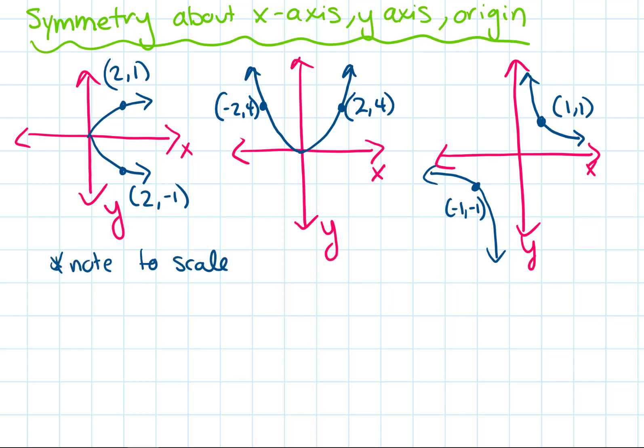In the first diagram, this is a visual example of symmetry about the x-axis. Our x-axis is our horizontal axis. The reason this relationship has symmetry about the x-axis is that we have two coordinates shown. The x values of those coordinates are the same, and the y values are reflections of each other — that means it's symmetrical about the x-axis. So if we start with some coordinate (x, y), the symmetrical coordinate has the same x value and the opposite sign for the y value. That is always the case when it's symmetrical about the x-axis.